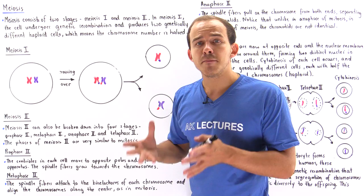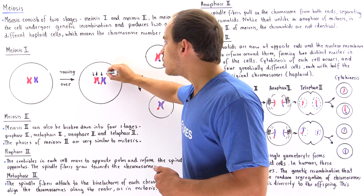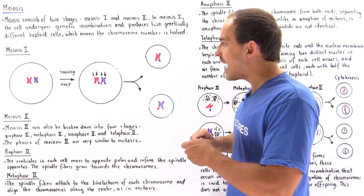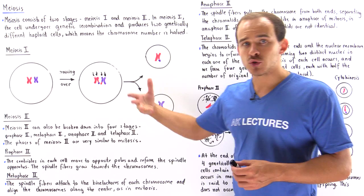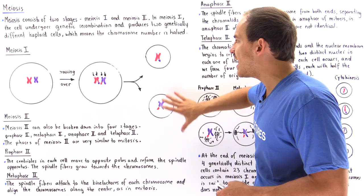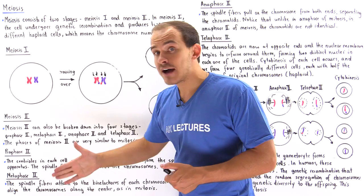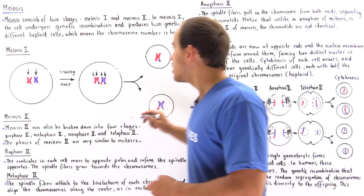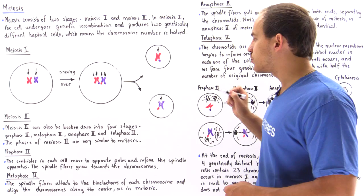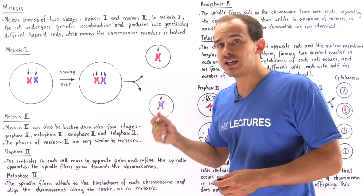Each one of these chromatids is genetically different from the other. The following processes — metaphase 1, anaphase 1, telophase 1, and cytokinesis of meiosis 1 — lead to division of the cell into two genetically different haploid cells. Haploid means these cells have half the original chromosome number, so each will have one chromosome, and each chromosome still consists of two individual chromatids that are genetically different from each other.